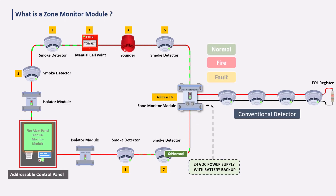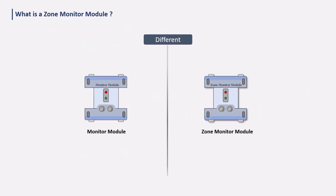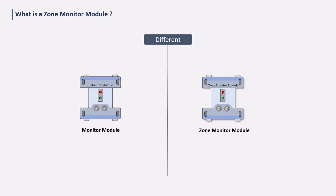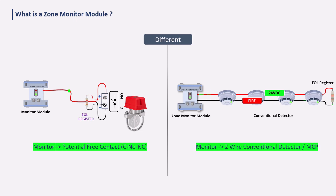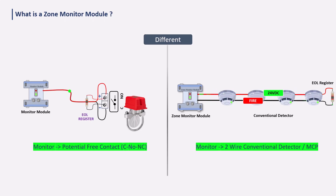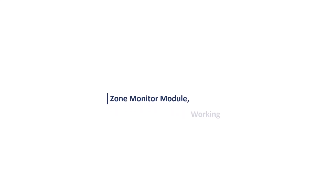The zone monitor module works like a conventional one-zone panel. You might be thinking that the zone monitor module and monitor module perform the same function — so what is the difference? Both work to monitor devices, meaning to take input signals. The difference is that the monitor module monitors devices that provide a potential-free common annunciation signal, but the zone monitor module monitors the conventional two-wire detector or MCP, supplying power to the detector and receiving the fire signal on the same line.